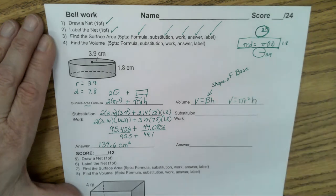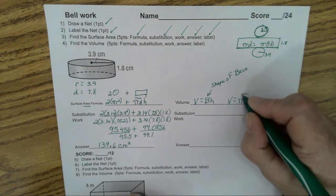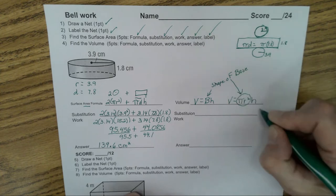Any questions on that? Does everyone have that written down? So πr² is the circle, that's the shape of the base, times the height.